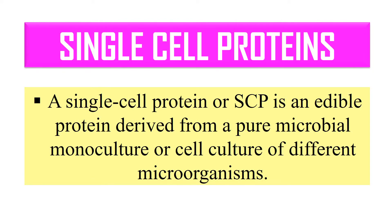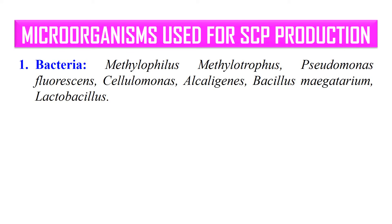Now let's discuss what microorganisms can be used for single cell protein production. They may be bacteria, yeast, fungus, and algae. In the case of bacteria, Methylophilus methyltrophus, Pseudomonas fluorescence, Cellulomonas, Alkaligenes, Bacillus megaterium, and Lactobacillus are generally used.